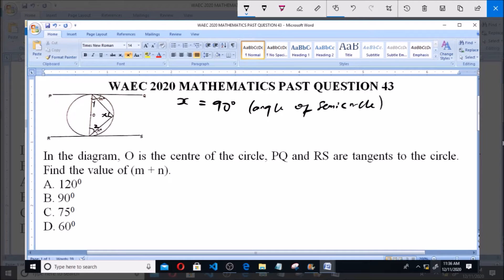Now, Y is equal to Z because they are base angles of an isosceles triangle. They are equal, so Y equals Z.